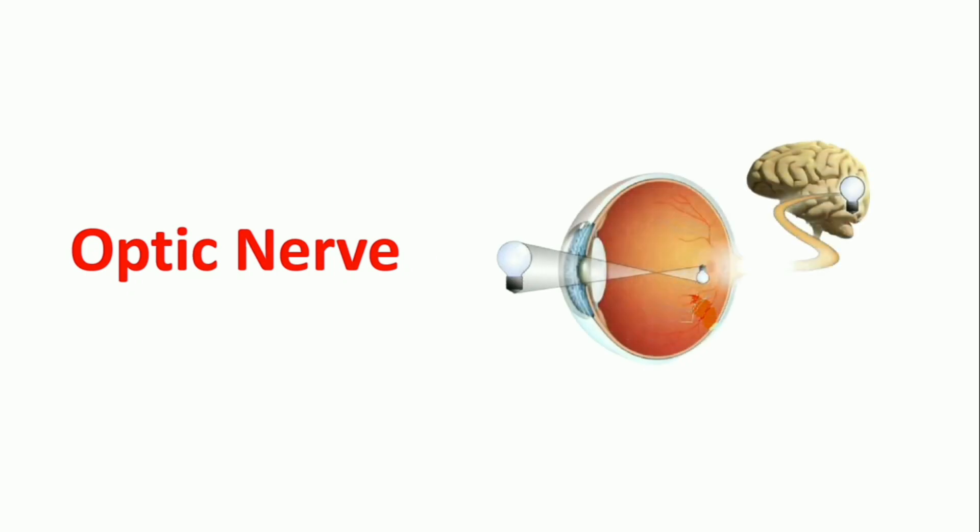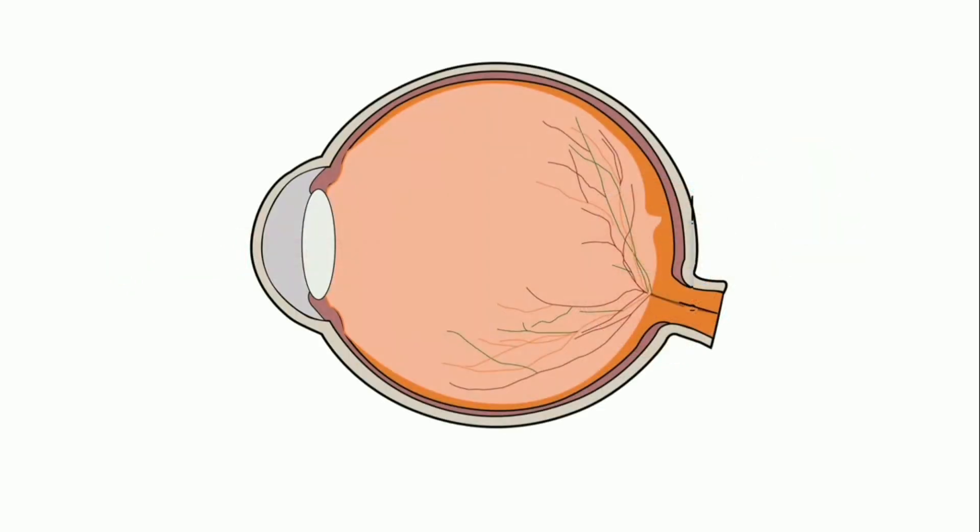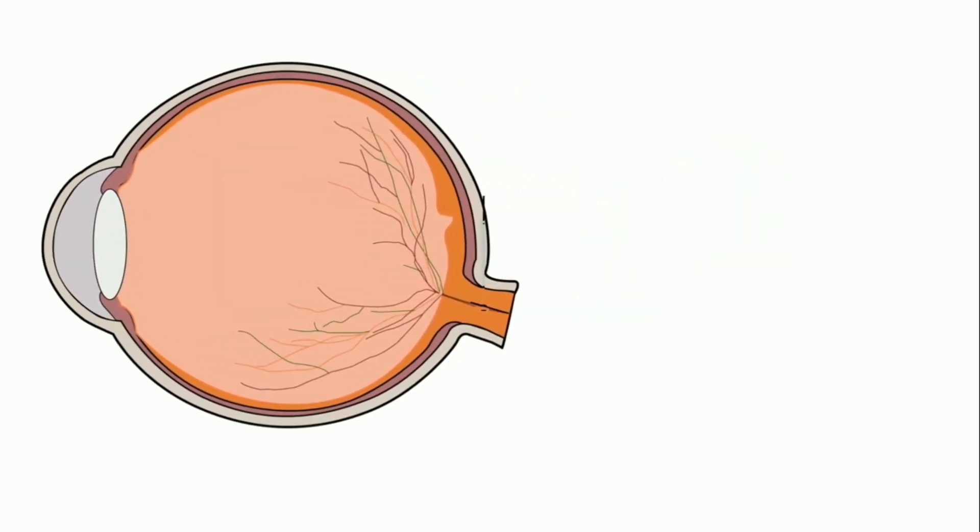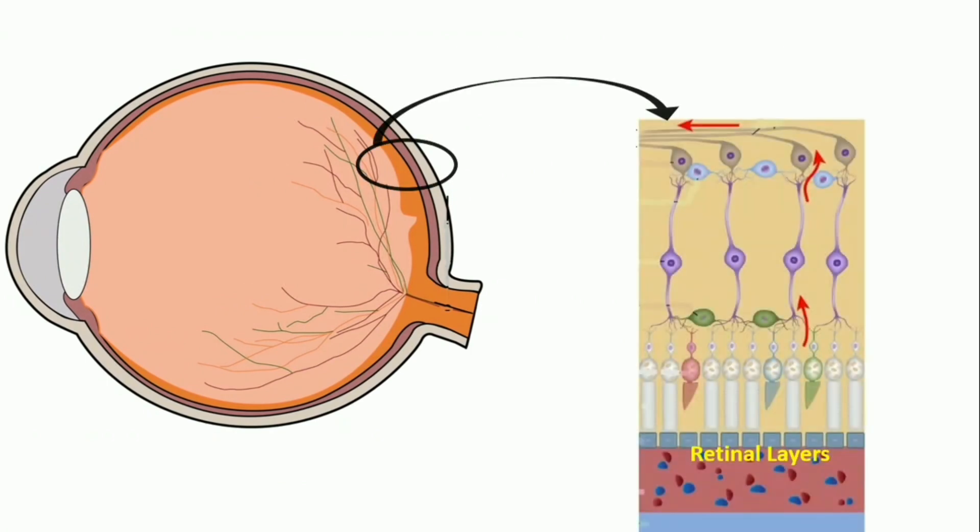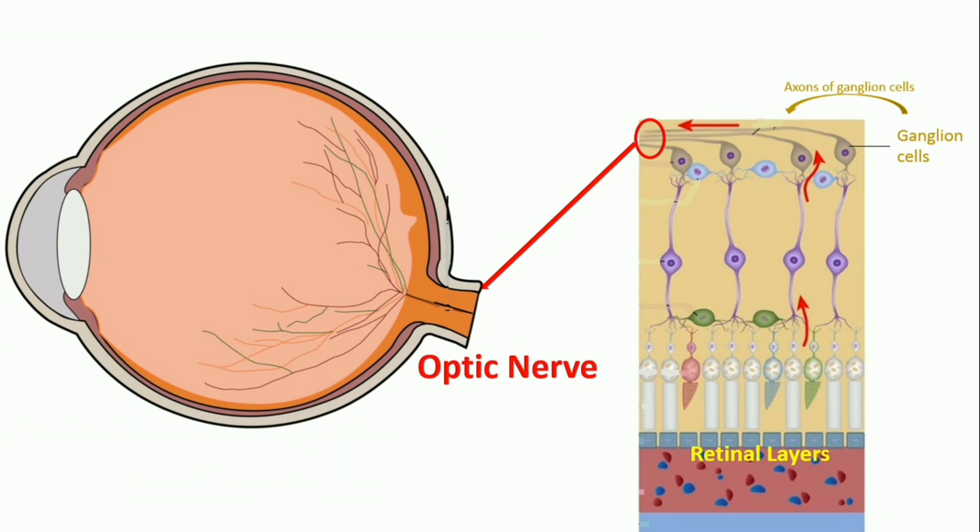Optic nerve is the second cranial nerve responsible for carrying special sensory afferents of vision. The eyeball consists of three layers. The innermost retinal layer contains several kinds of cells which ultimately synapse on ganglion cells. Axons of ganglion cells combine to form the optic nerve, which conveys visual sensation to the brain.